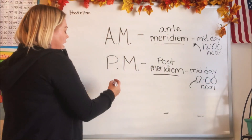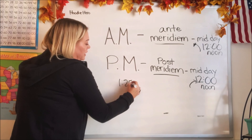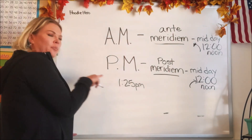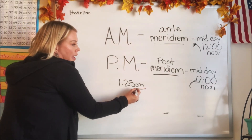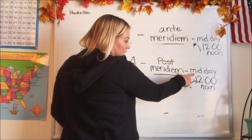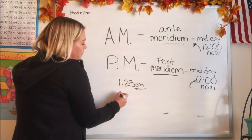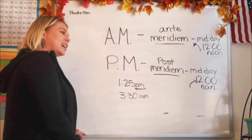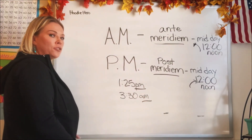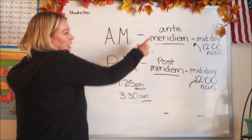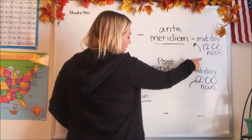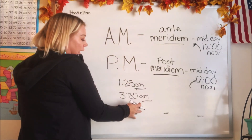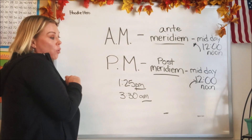So if a time says 1:25 p.m., you might wonder if that's morning or afternoon. But the p.m. tells us it's after midday — so that's the afternoon. What if you saw 3:30 a.m.? Does that mean afternoon or really early in the morning? Well, a.m. means before midday, so that's in the morning. So p.m. stands for afternoon and a.m. stands for before noon, which is morning.